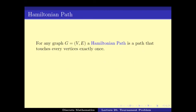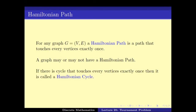There are different kinds of paths that we study. One important for this problem is the Hamiltonian path — a path that touches every vertex exactly once. A graph may or may not have a Hamiltonian path. If there is a cycle that touches every vertex exactly once, we call it a Hamiltonian cycle. Hamiltonian paths and Hamiltonian cycles are of extreme importance and have been studied quite thoroughly.